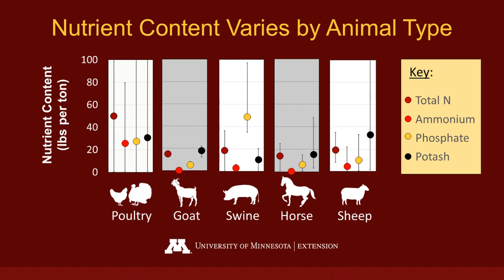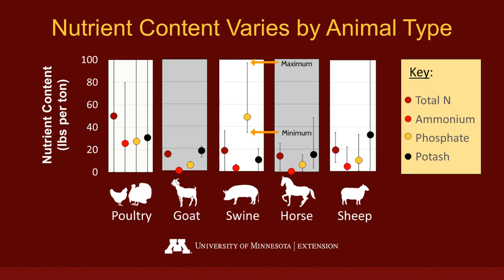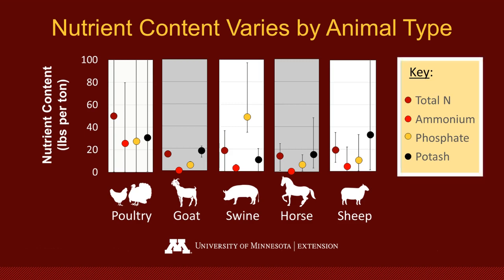Along the left of the graphic, on the y-axis, you'll see the nutrient content in pounds of nutrient per ton of manure, ranging from 0 to 100. The circles represent the average amount of each nutrient found in the manure, and the bars show the minimum and maximum values to illustrate the variability. The dark red circle shows total nitrogen, the lighter red shows ammonium, the yellow shows phosphate, and the black shows potash, or potassium.